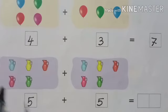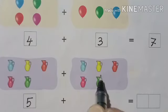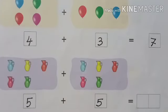In total, all together, how much you have? 1, 2, 3, 4, 5, 6, 7, 8, 9, 10. So our answer is 10.